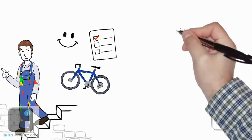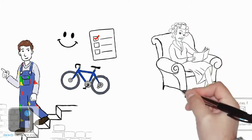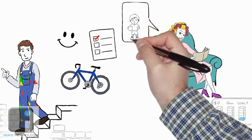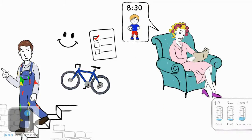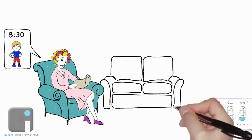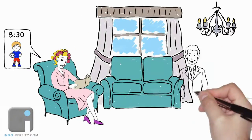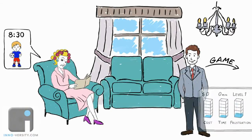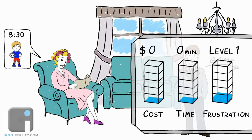As he opens the basement door, his wife reminds him of their son's soccer game at eight thirty and that he can't wear his old painting clothes to the game. He goes upstairs, changes, and leaves for the game. His cost at this point is still zero. He's got about fifteen minutes into it, and his frustration level is now at a one point five.